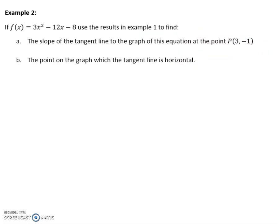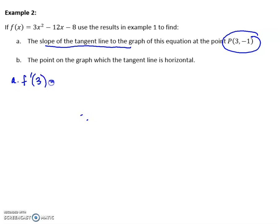For my next example, I'm going to use the same results I just got. If I want the slope of the tangent line at a point, I just want the derivative at that point. So if I plug in 3, I get the correct slope. You already know the derivative is 6x minus 12, so plugging in 3 gives a slope of 6 at x equals 3.